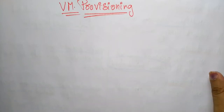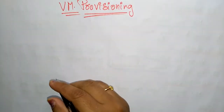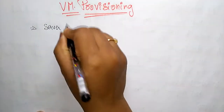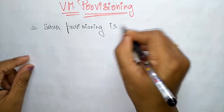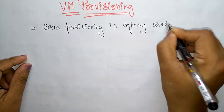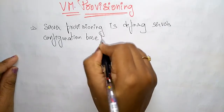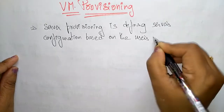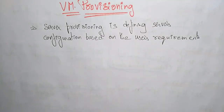Hi students, coming to the next topic — virtual machine provisioning. So how are we going to provision a virtual machine in our systems? A server provisioning is defined as defining service configuration. We can take a virtual machine as a server. So server provisioning is defining the service configuration based on the users' requirement, whether it's your personal system or a cloud environment.